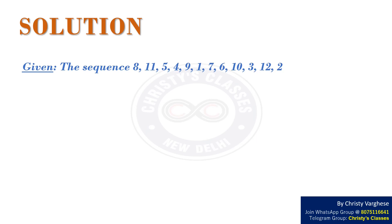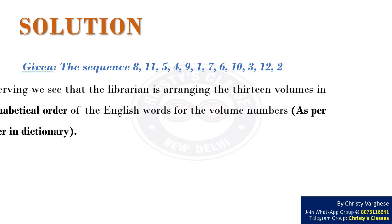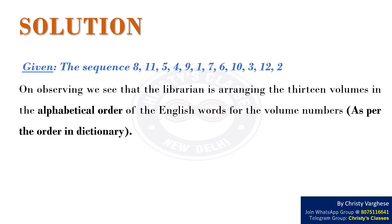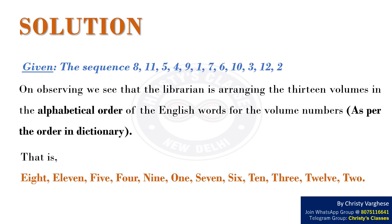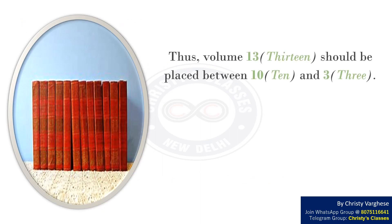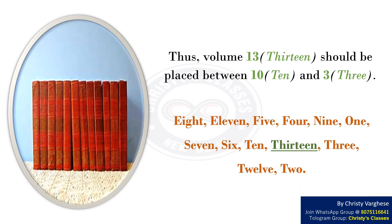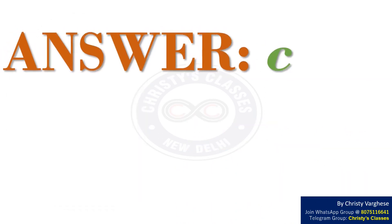The given sequence is 8, 11, 5, 4, 9, 1, 7, 6, 10, 3, 12, and 2. On observing, we see that the librarian is arranging the 13 volumes in the alphabetical order of the English words for the volume numbers, i.e., as per the order in the dictionary. Thus, volume 13 should be placed between 10 and 3. The right answer to the question is option C.